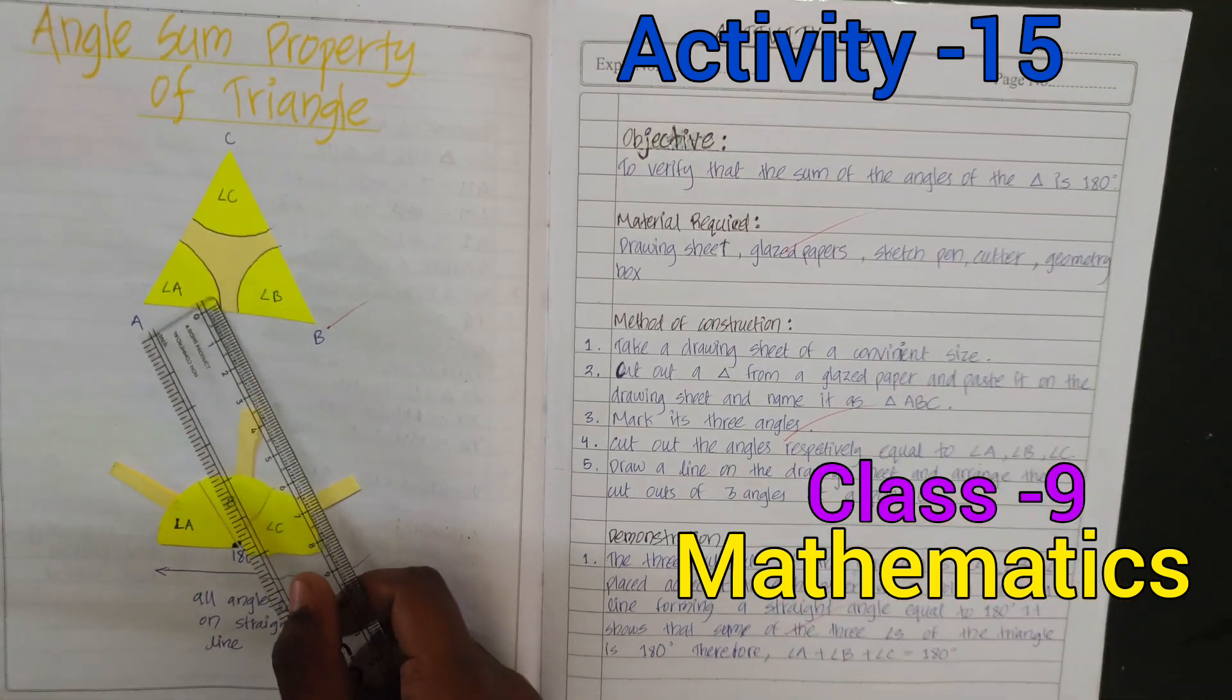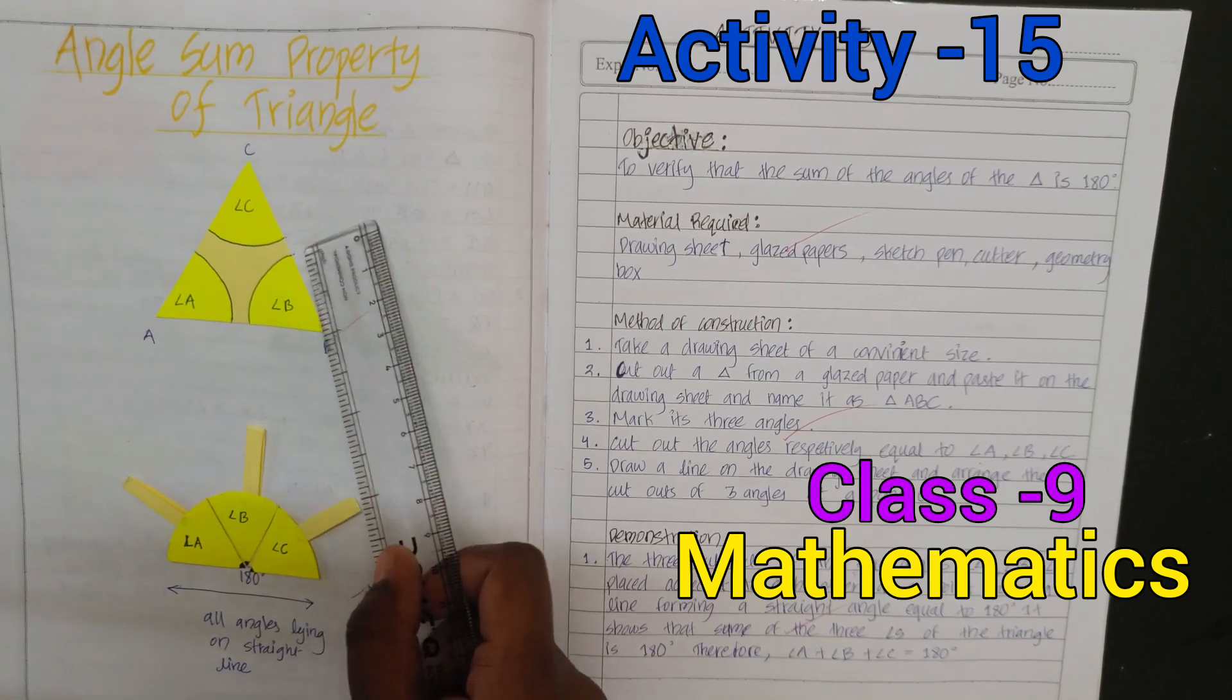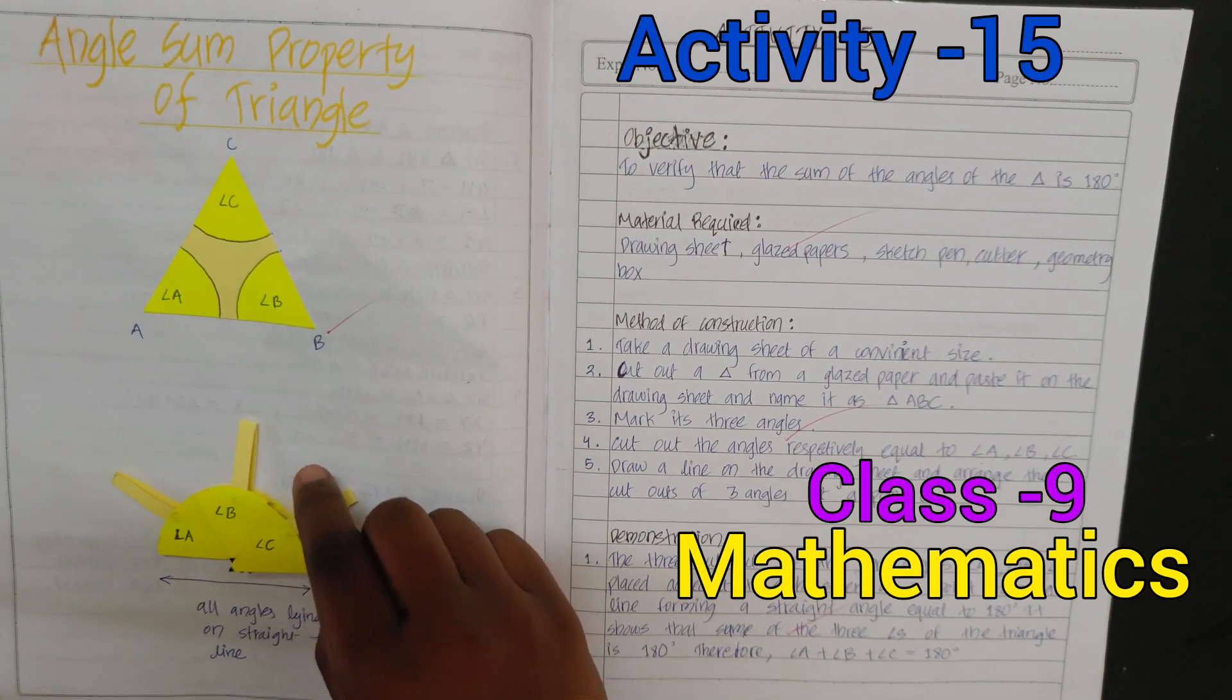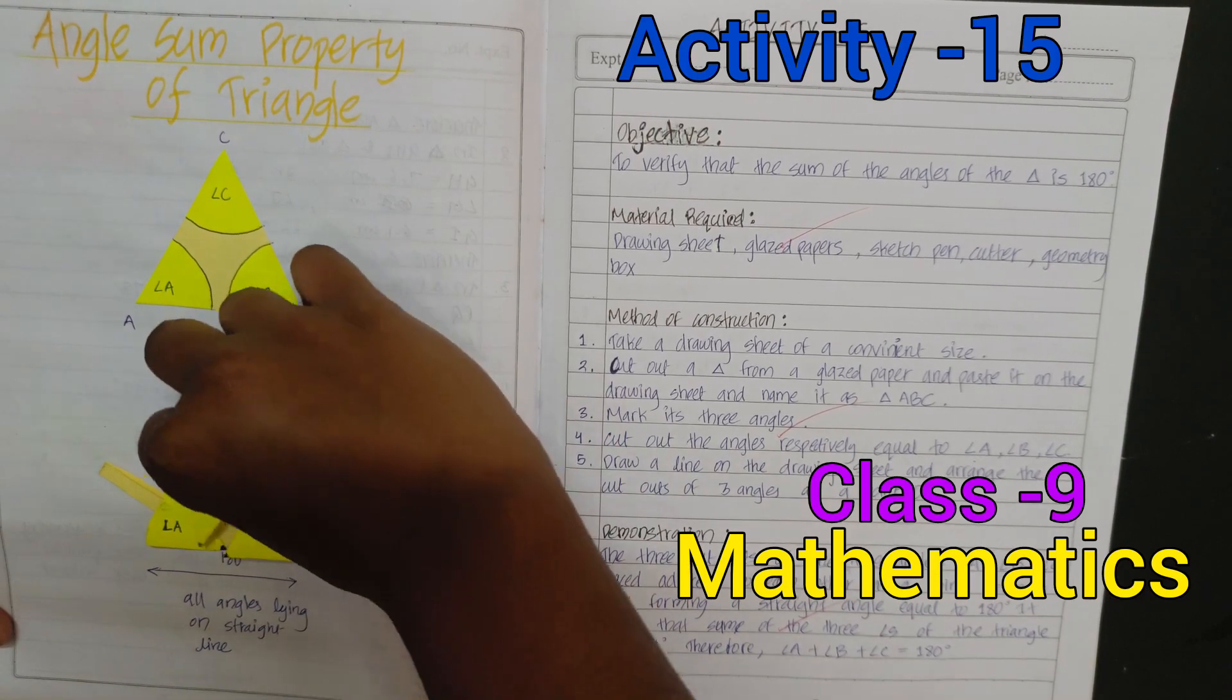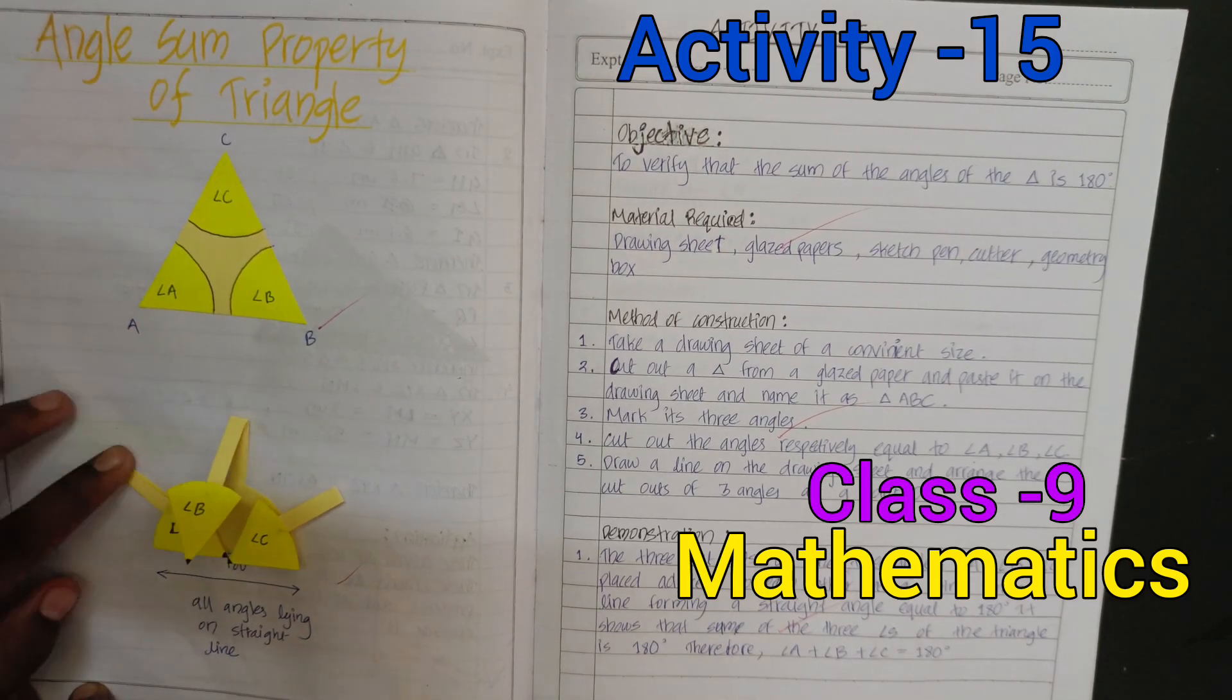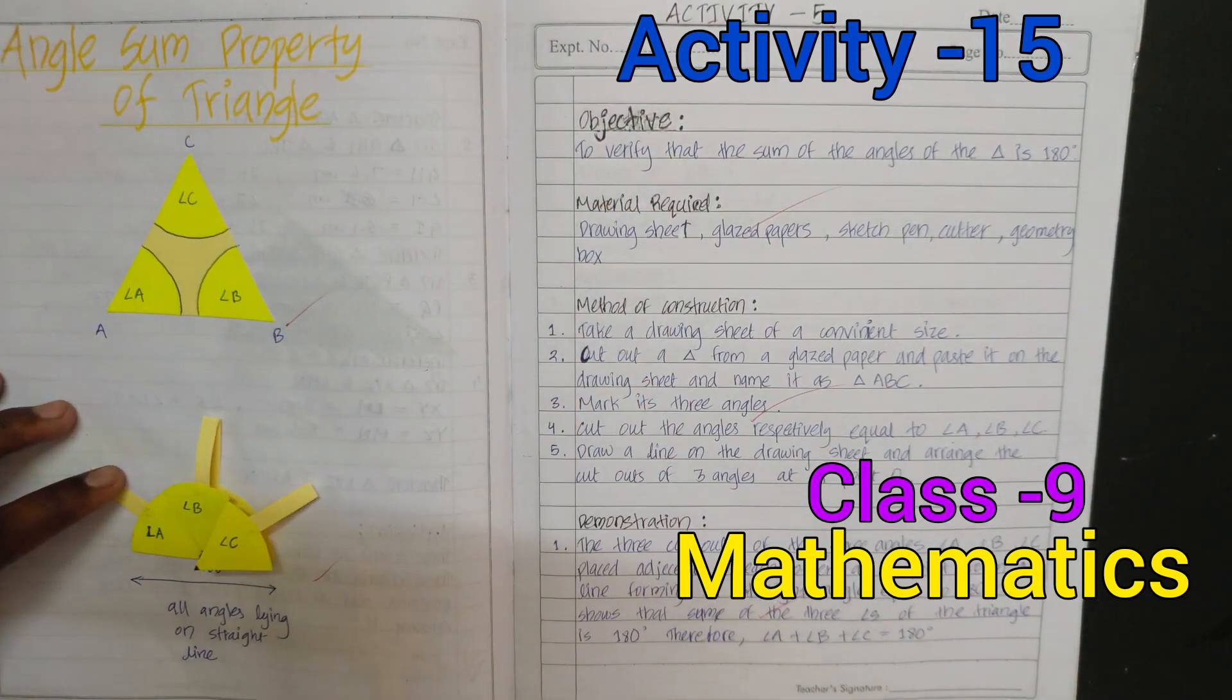We will draw a triangle ABC, then we will mark their angles: angle A, angle B, and angle C. We will cut these angles of the same size here and paste like this: angle A, angle B, and angle C.